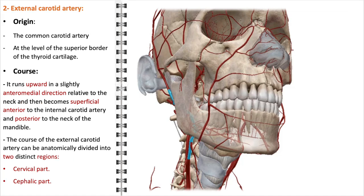Each region has several key branches with specific roles. The cervical part includes branches like the superior thyroid artery, which supplies the thyroid gland, and the ascending pharyngeal artery, vital for the pharyngeal region. In the cephalic part, the artery gives rise to branches such as the facial artery, responsible for supplying blood to the anterior face, and the superficial temporal artery, which supplies the temple and scalp.